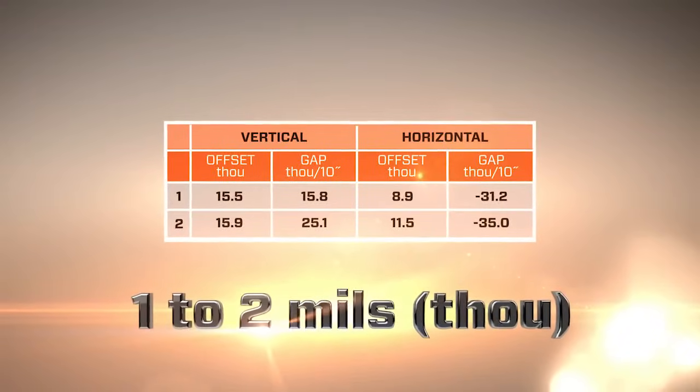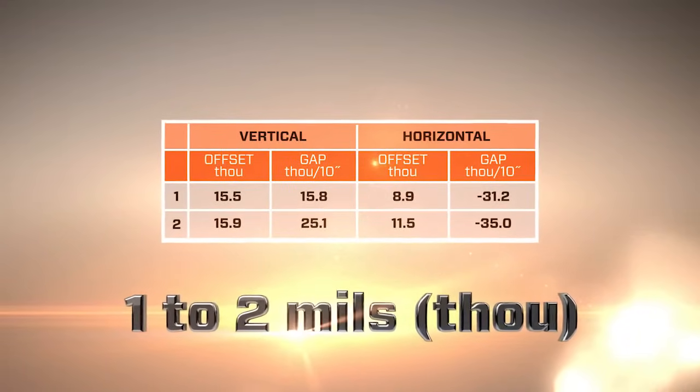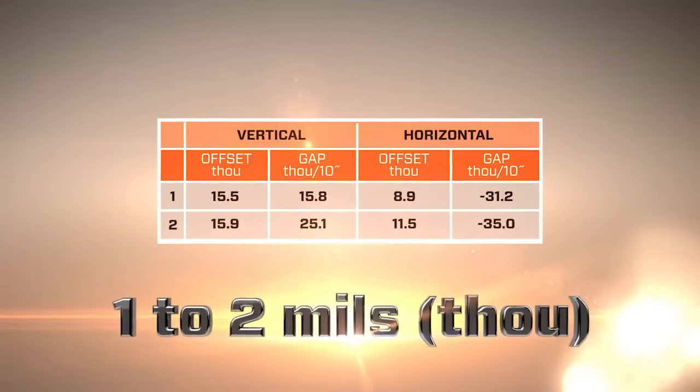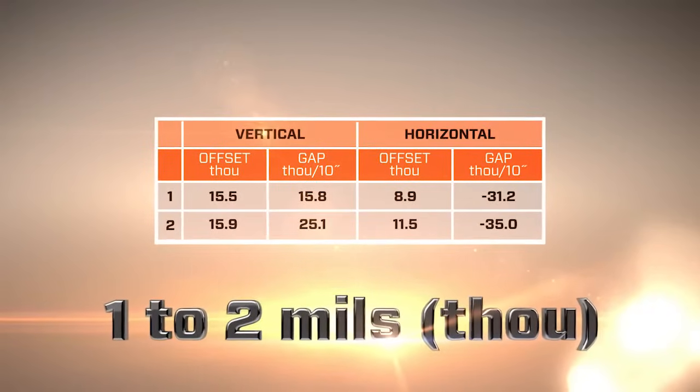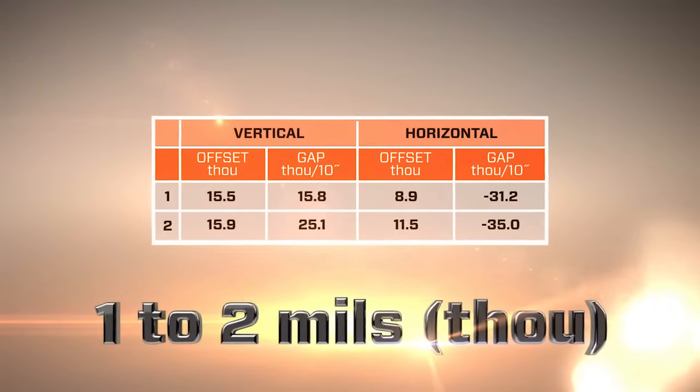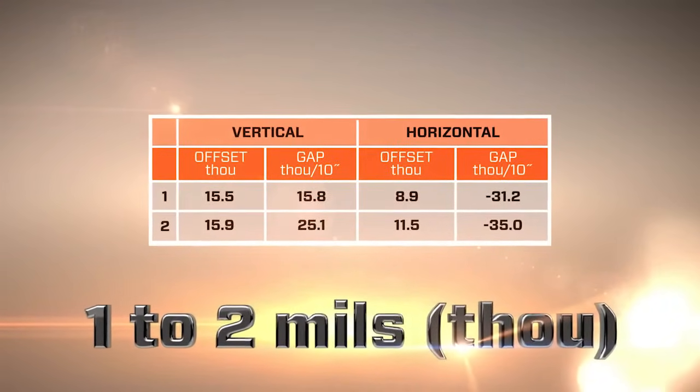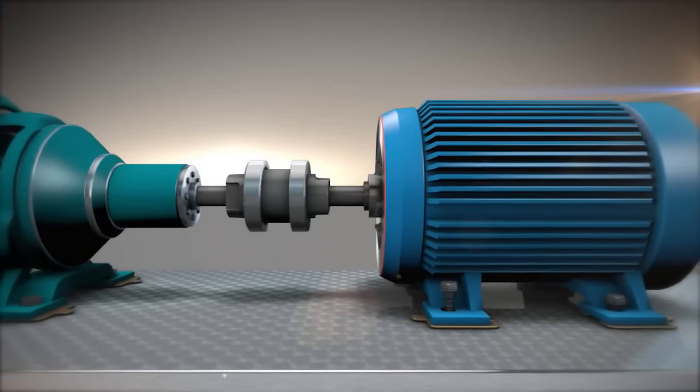Once rough alignment has been performed, the results should be no more than one or two thousandths apart, which is not the case in this example. It makes no sense to proceed with the alignment until and unless repeatable readings have been achieved. If repeatability is poor,